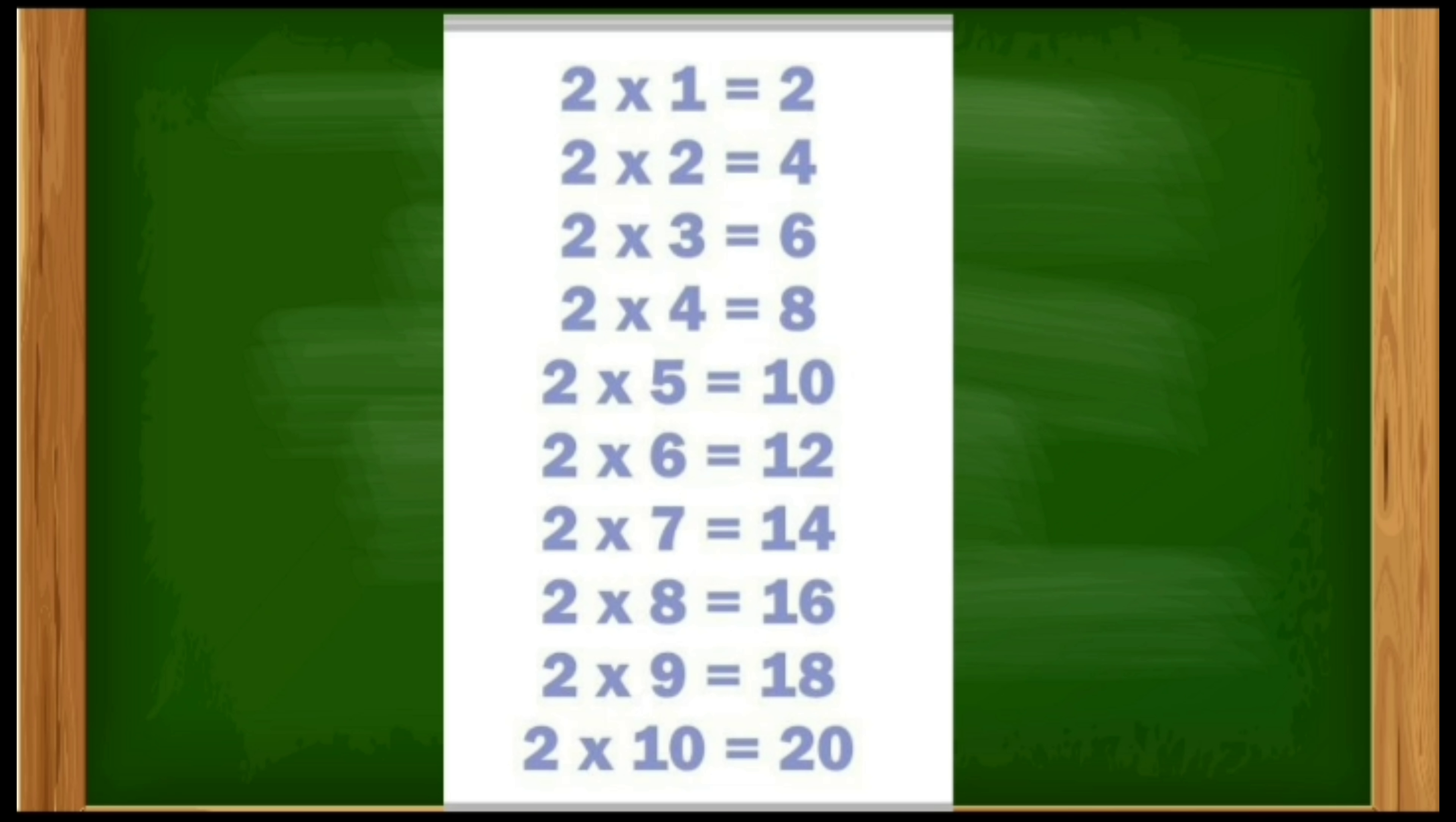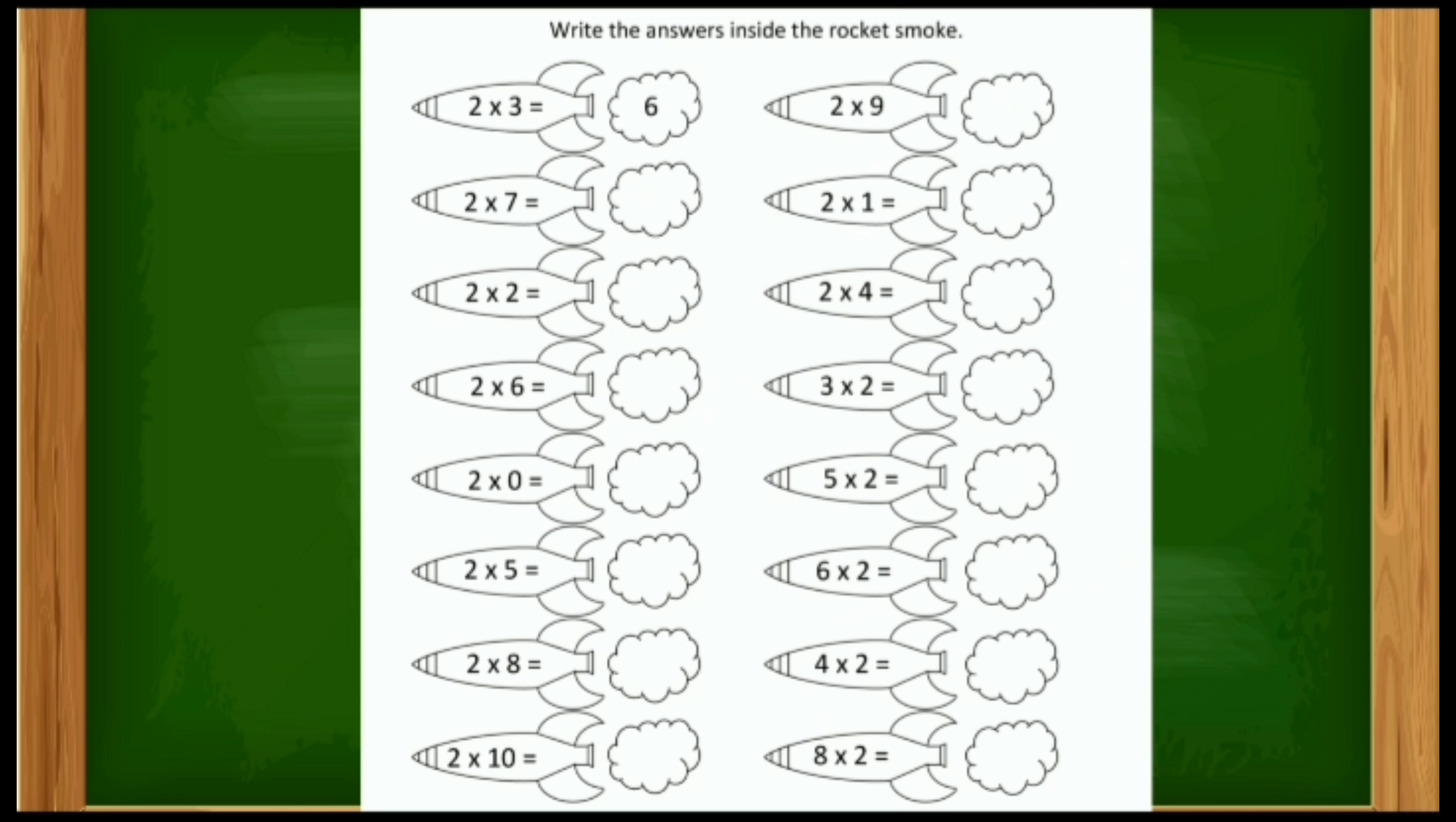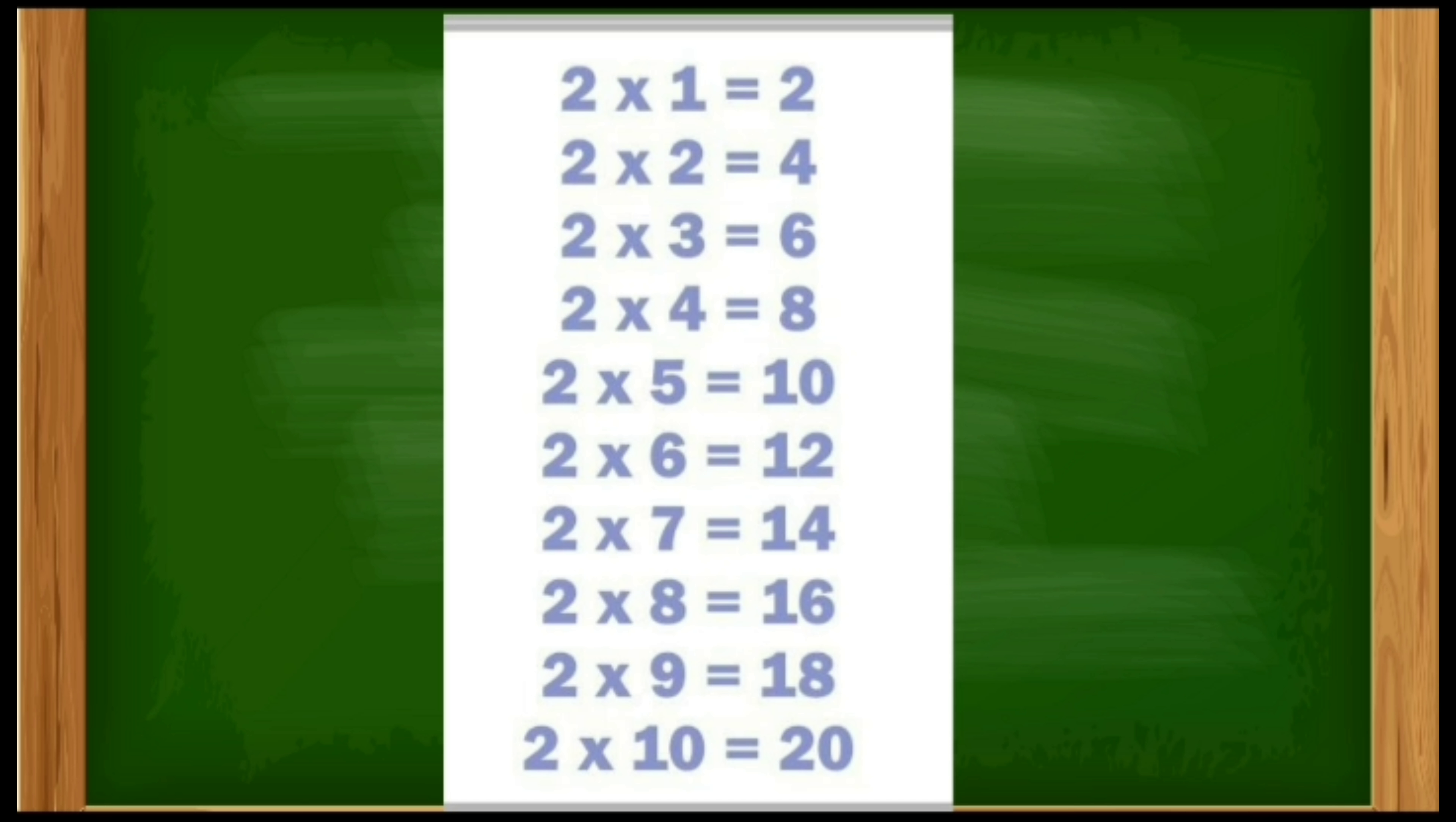Two ones are two. Two twos are four. Two threes are six. Two fours are eight. Two fives are ten. Two sixes are twelve. Two sevens are fourteen. Two eights are sixteen. Two nines are eighteen. Two tens are twenty.